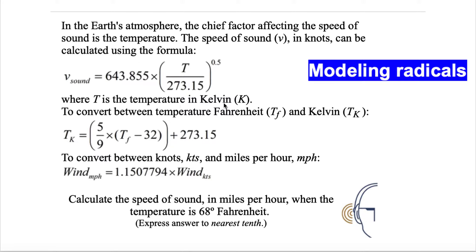Where T is the temperature in Kelvin. To convert between the temperature in Fahrenheit, Tf, and Kelvin, Tk, we use this formula here. To convert between knots and miles per hour, we use this formula — wind miles per hour equals wind knots multiplied by this factor here.